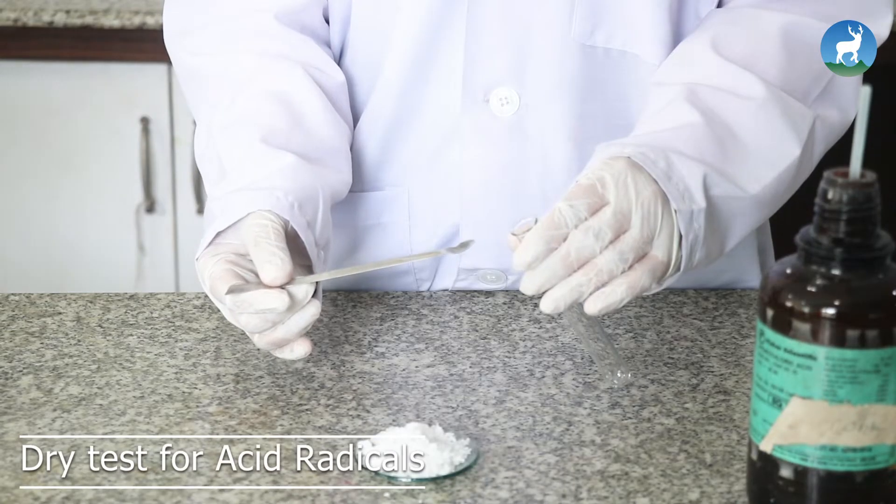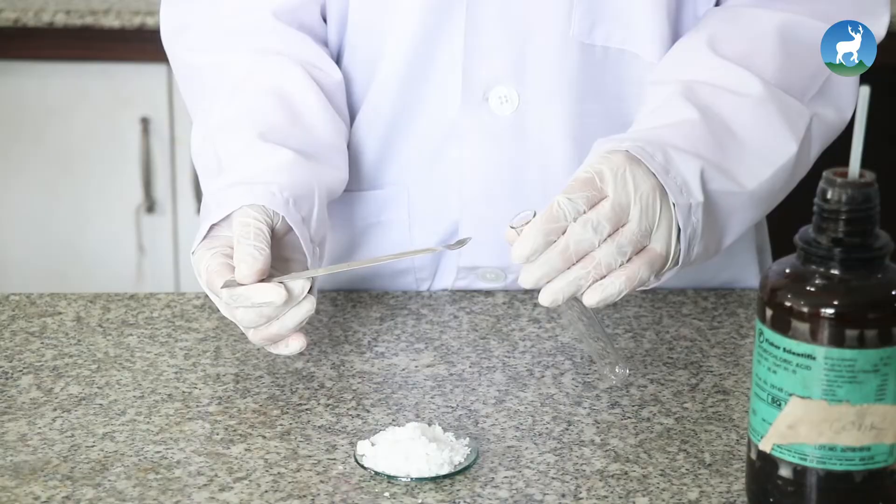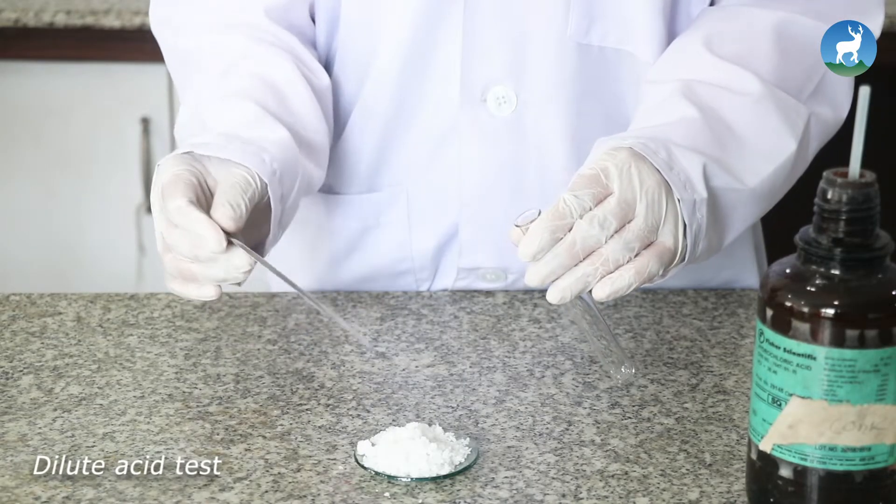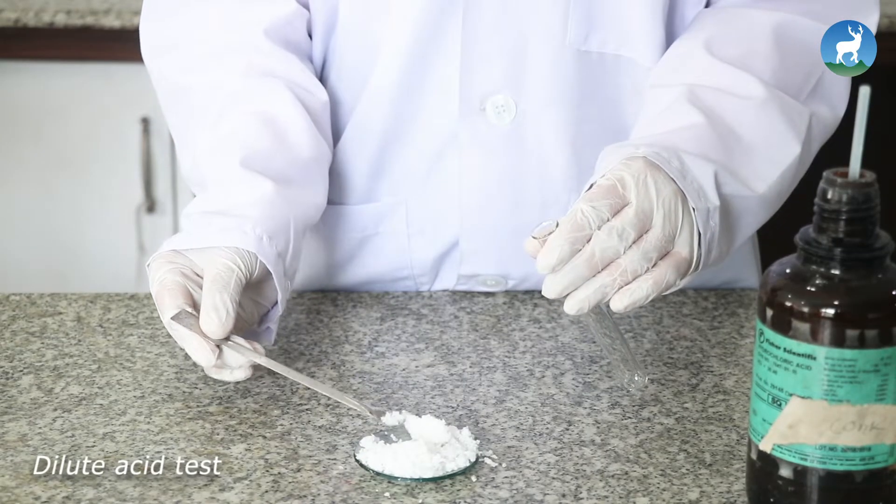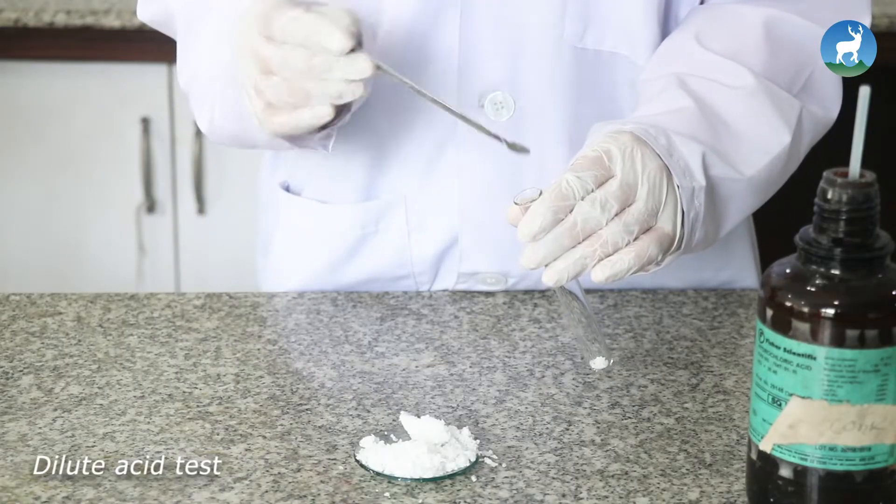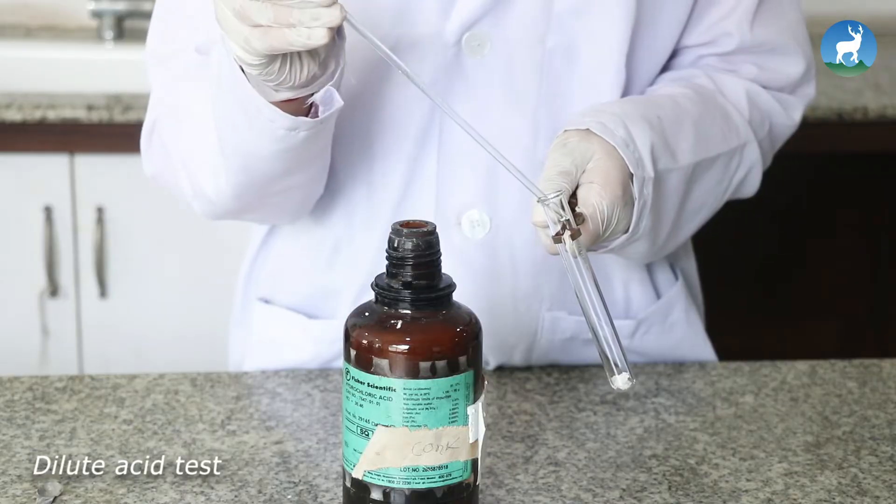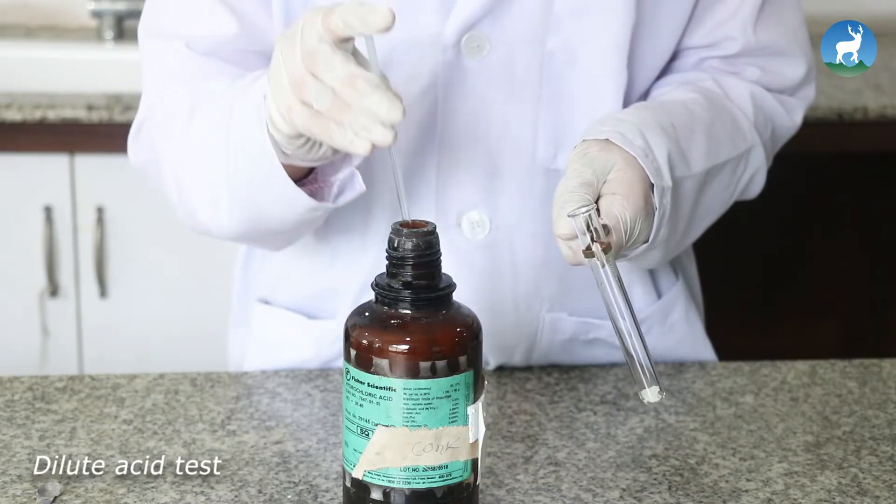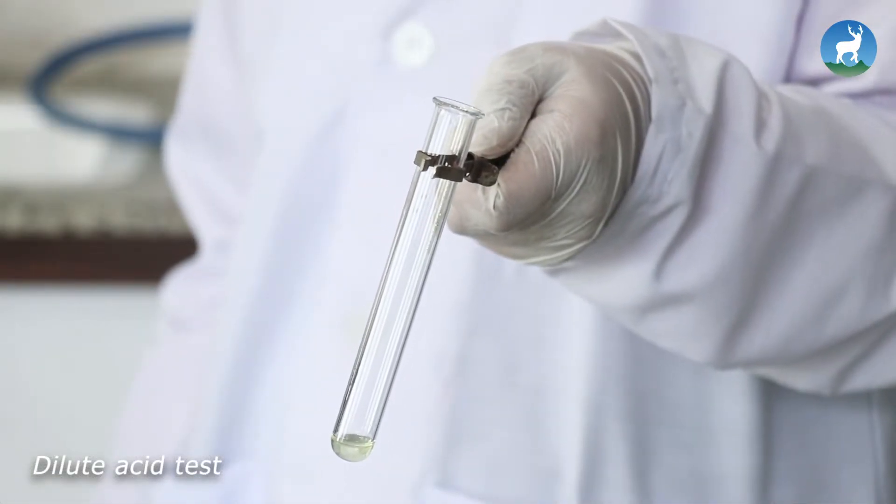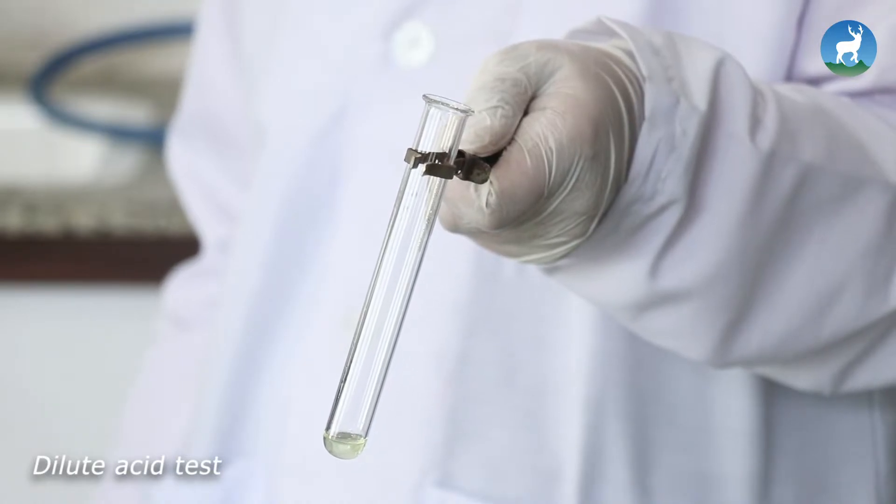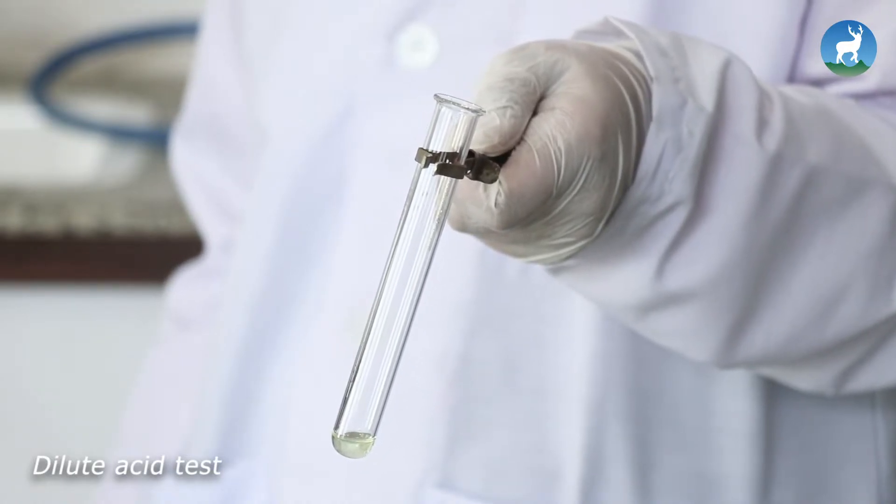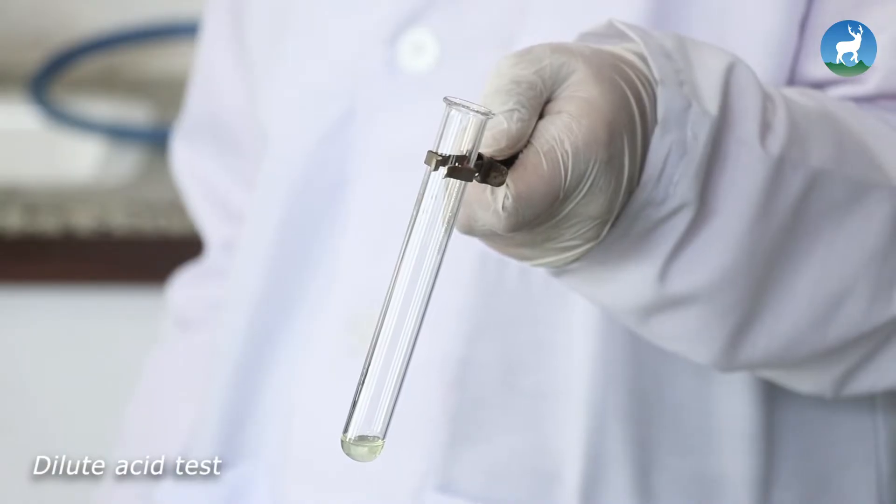Dry tests for acid radicals. Dilute acid test: Take a pinch of given salt in a clean and dry test tube. Add few drops of dilute HCl. No gas was evolved. It indicates the absence of nitrite, sulfite, carbonate, and sulfide ion in the sample.